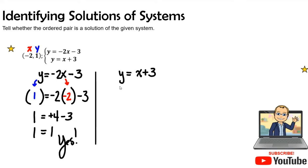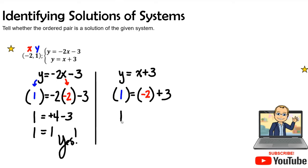Now let's check the second equation to see if it works the same way. Wherever I see y, I'll substitute 1 with parentheses, and wherever I see x, I'll substitute with negative 2, giving us 1 equals negative 2 plus 3. That's the same as 3 minus 2, and 3 minus 2 is 1 as well.